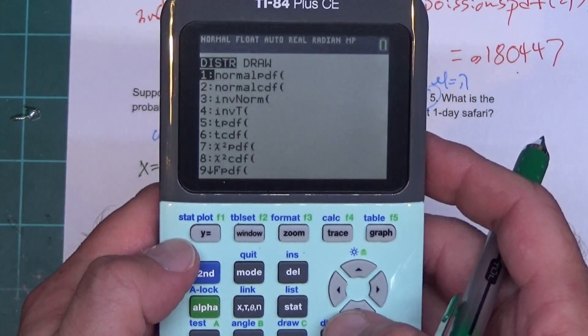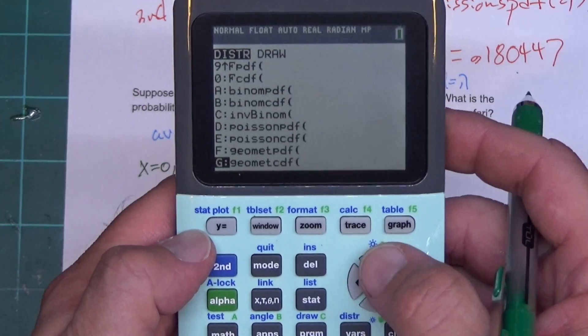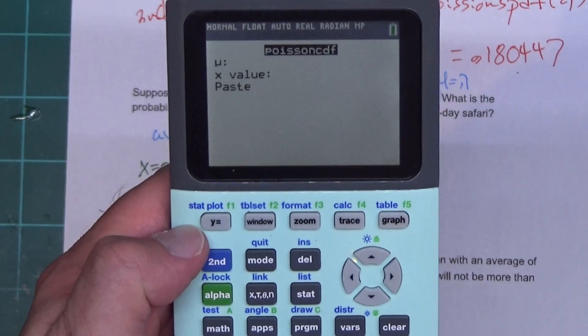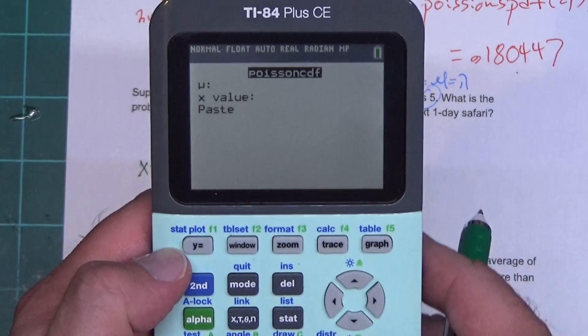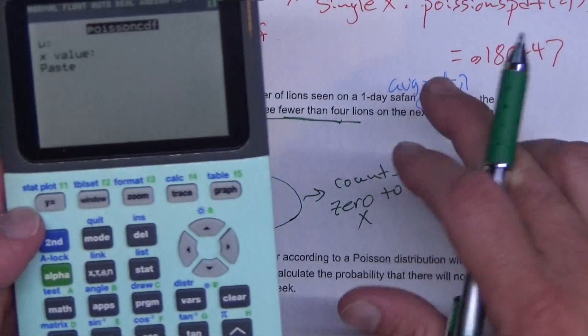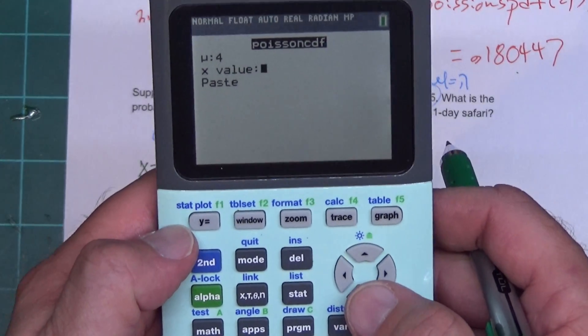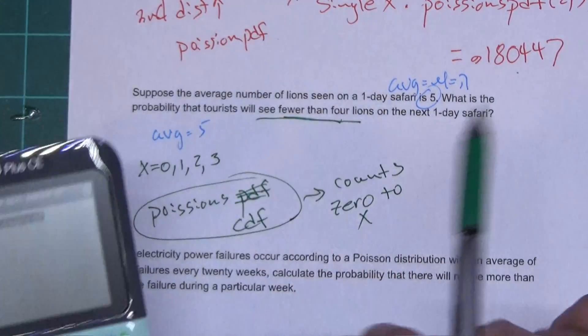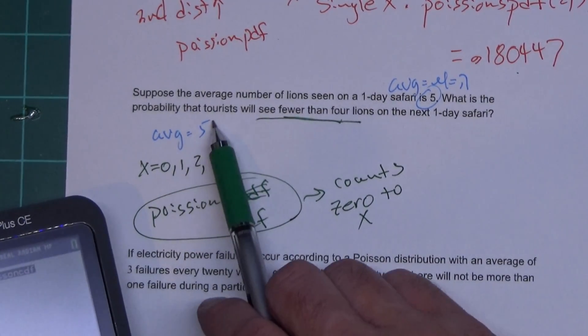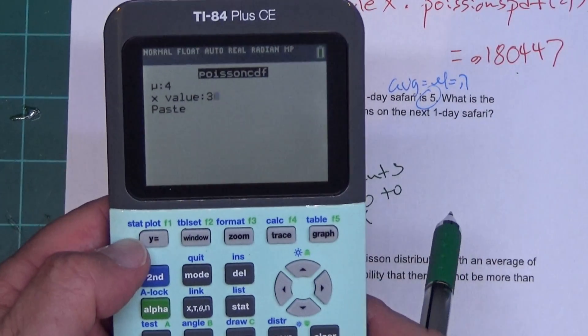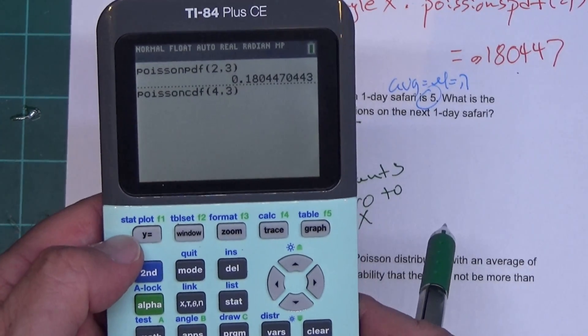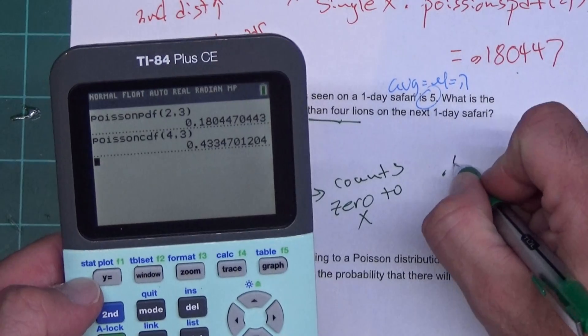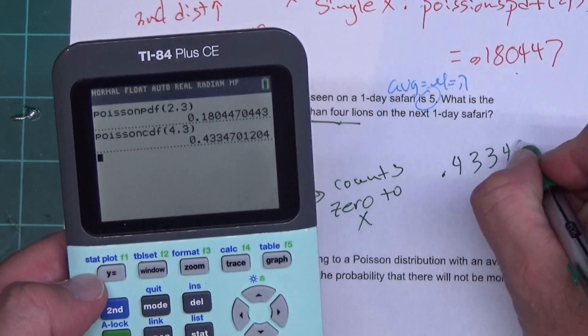So we're going to pull this up. We get it the same way - we hit second, distribution. You can see it right there. We press the up button and we're going to Poisson CDF, and it looks the same. It says mu and X value. Mu on this one again was five. Our X value was three because we're counting up to three, and you can see it right here. My average is five, my X is three. We hit paste and press enter one more time, and I'm getting 0.433447.